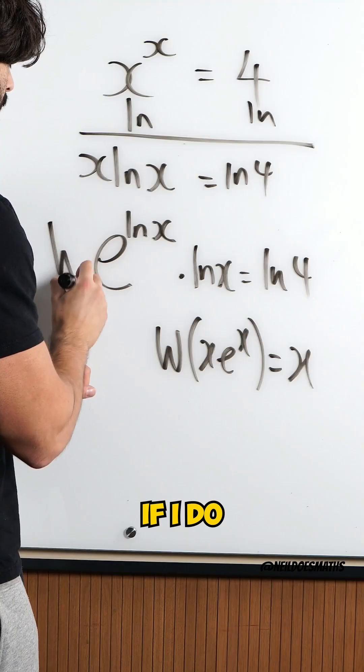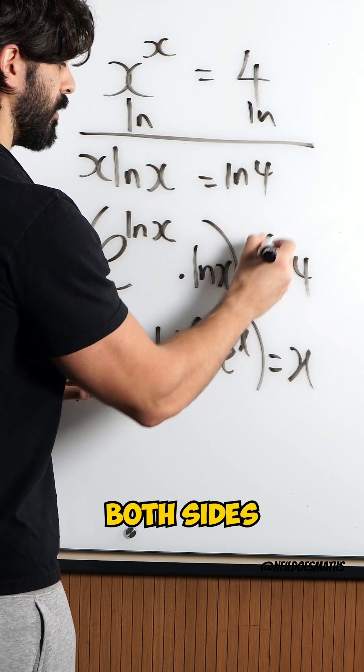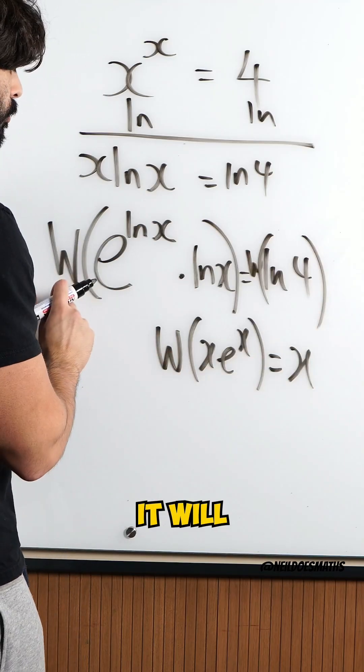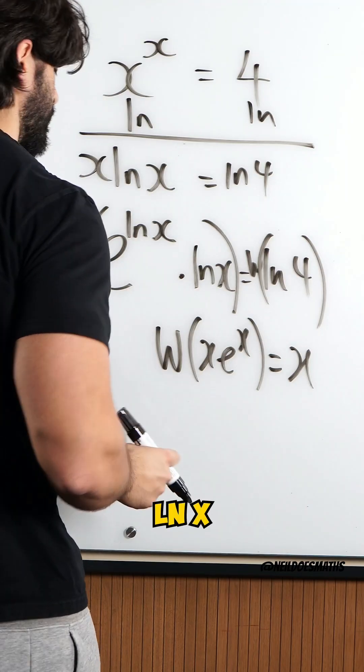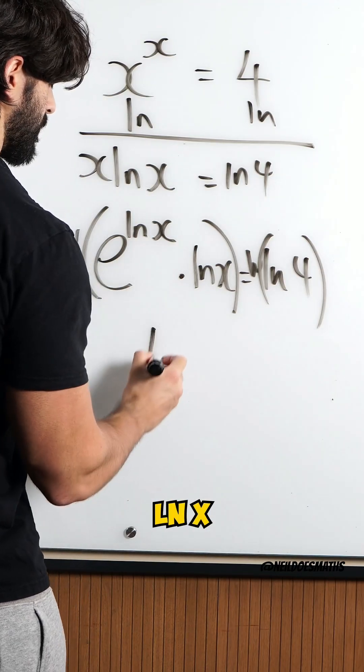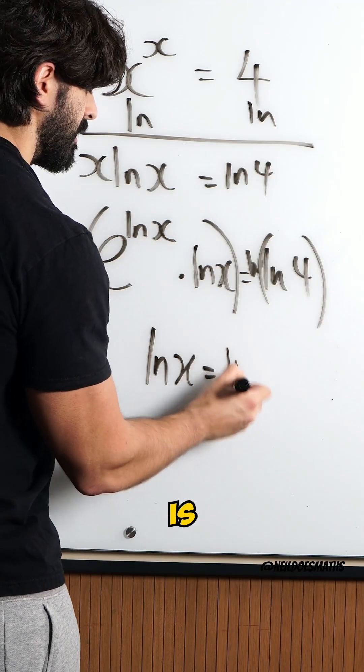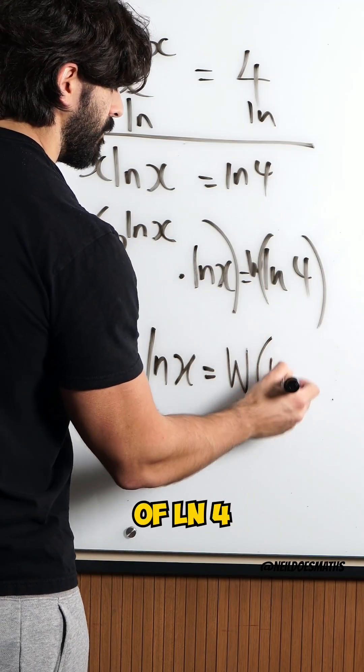So if I do the Lambert W of both sides it will rewrite this as just the power of ln x. So I get ln x is the Lambert W of ln 4.